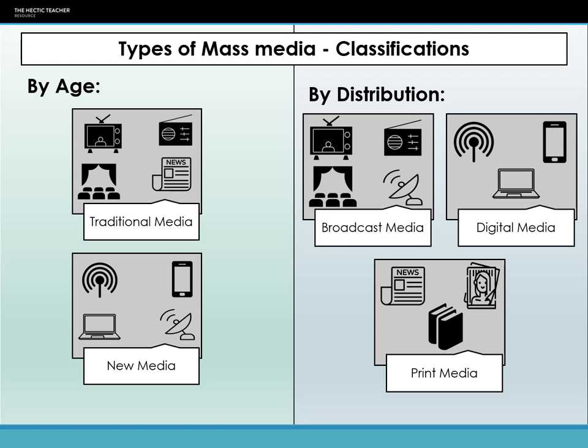Print media is physical — you hold it in your hands. Either way, media is vast. There are lots of different forms and lots of different ways we can consume it. The big thing to remember is that for it to be mass media, it needs to be consumed by large numbers of people, and also simultaneously — or at least capable of being consumed simultaneously.